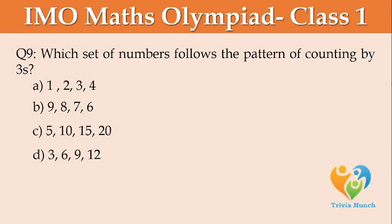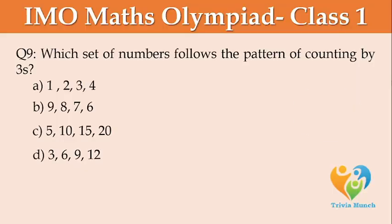Which set of numbers follows the pattern of counting by 3s? Option A: 1, 2, 3, 4. Option B: 9, 8, 7, 6. Option C: 5, 10, 15, 20. Option D: 3, 6, 9, 12.